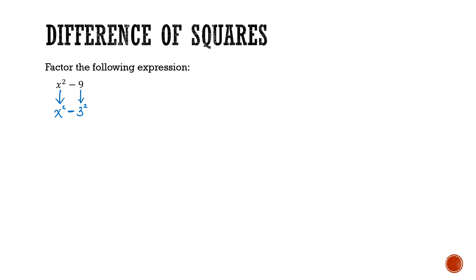Whenever we see this pattern, the expression can be factored into two terms. In each set of brackets, the first term is going to be the square root of the first term — the square root of x squared is x. The second term is the square root of 9, which is 3. Between the x and the 3 in each bracket, one gets a plus and the other a minus, giving us x plus 3 times x minus 3. And then you're done.